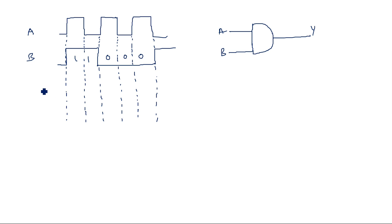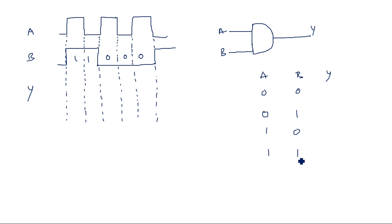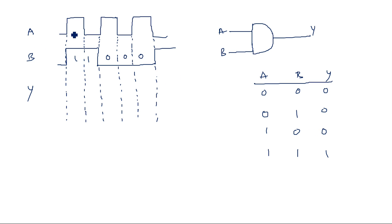Coming to the output waveform Y, we know the AND operation. From the truth table: zero zero gives zero, zero one gives zero, one zero gives zero, one one gives one. When all inputs are ones the output is one; in remaining cases the output is zero. So when both A and B are ones, then only we will have output as one.